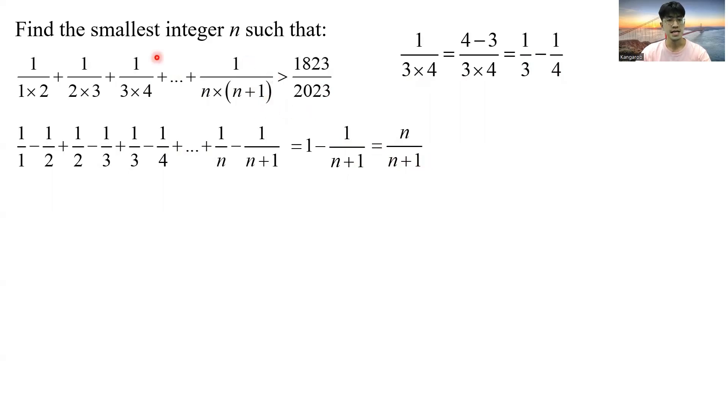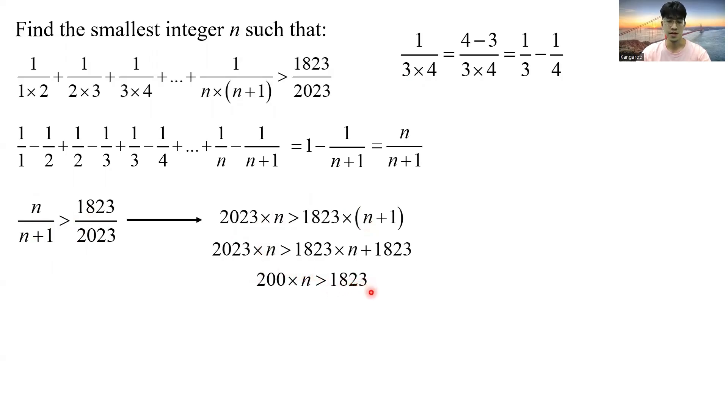Which equals n over n plus 1. So we have significantly simplified the left-hand side to just n over n plus 1. And so now we know n over n plus 1 should be greater than 1823 over 2023. Now what's the next step? We can do a cross multiplication.